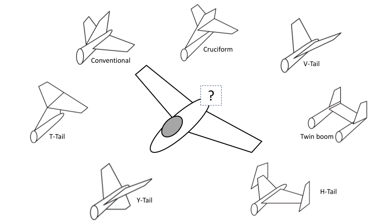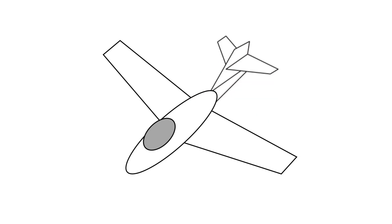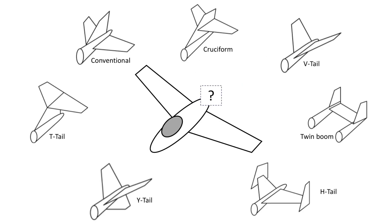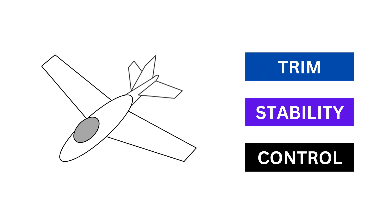Due to the many different types of tails, it can be confusing while selecting the best tail configuration for an aircraft. How do you know when to use a T-tail, a V-tail, or a boom-mounted tail? What are their pros and cons? In this video, we will look at the different types of aft tails and their pros and cons.